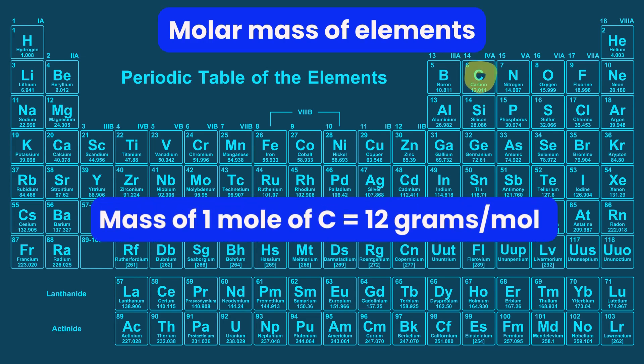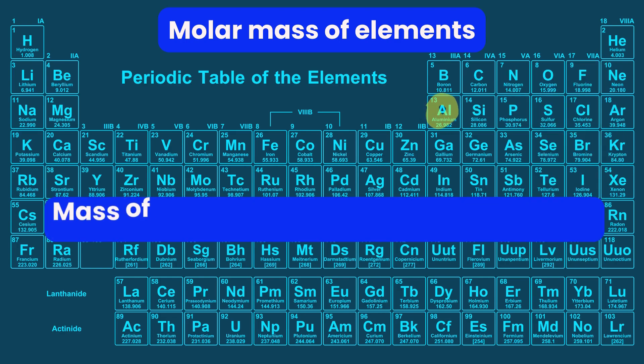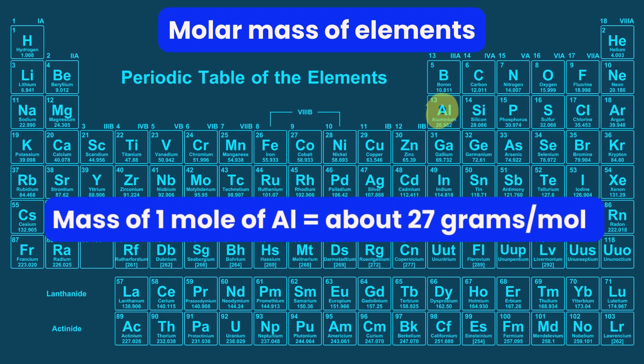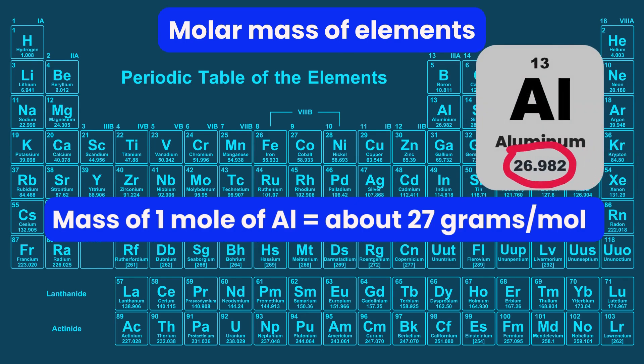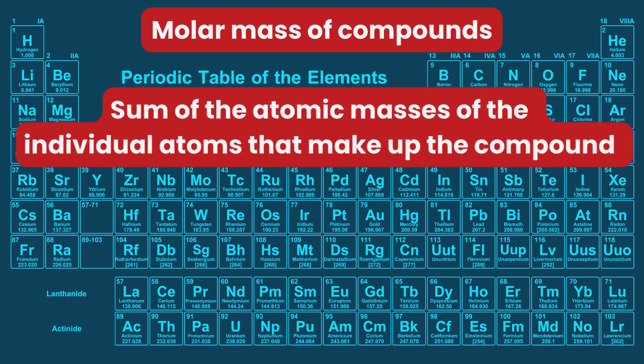Molar mass of elements: the mass of one mole of carbon is about 12 grams per mole, since carbon's atomic mass is 12.01 amu. The mass of one mole of aluminum is about 27 grams per mole, since aluminum's atomic mass is about 27 amu.